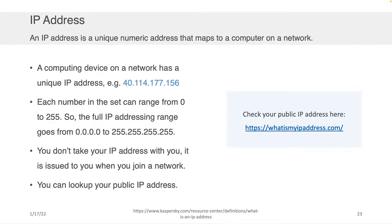Every computing device in our network will have a unique IP address. You can't have two machines with the same address, or you won't know how to uniquely deliver information from one to the other. Each number in the set can have a range from 0 to 255, so the full IP address range goes from 0.0.0.0 — also called localhost — to 255.255.255.255.